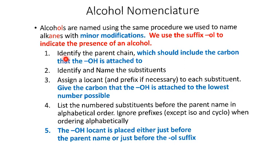Our first step is to identify the parent chain. Just like when we did alkenes and alkynes, where the parent chain had to include the double bond or triple bond, the same is true here — the parent chain has to include the OH. We then identify and name the substituents, and assign a locant to each. When numbering the parent chain, we want the OH to have the lowest number possible. We list substituents in alphabetical order before the parent name, ignoring prefixes except for 'iso' and 'cyclo'. The position of the OH group is given just before the parent name or just before the '-ol' suffix.